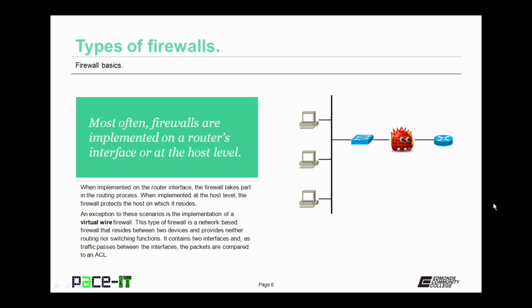Most often firewalls are implemented on a router's interface or at the host level. When implemented on the router interface, the firewall takes part in the routing process. When implemented at the host level, the firewall protects the host on which it resides. There is an exception: the virtual wire firewall. This type of firewall is a network-based firewall that resides between two devices and provides neither routing nor switching functions. It contains two interfaces, and as traffic passes between those interfaces, packets are compared to an ACL, but it does not protect a specific host and does not take part in the routing function.